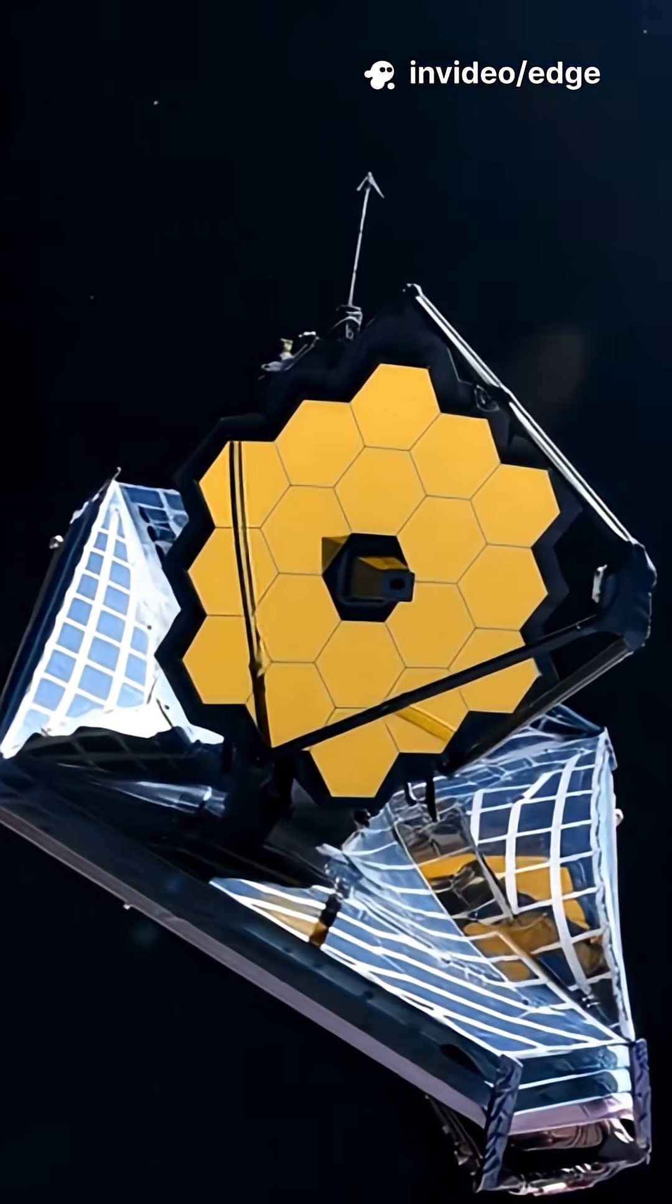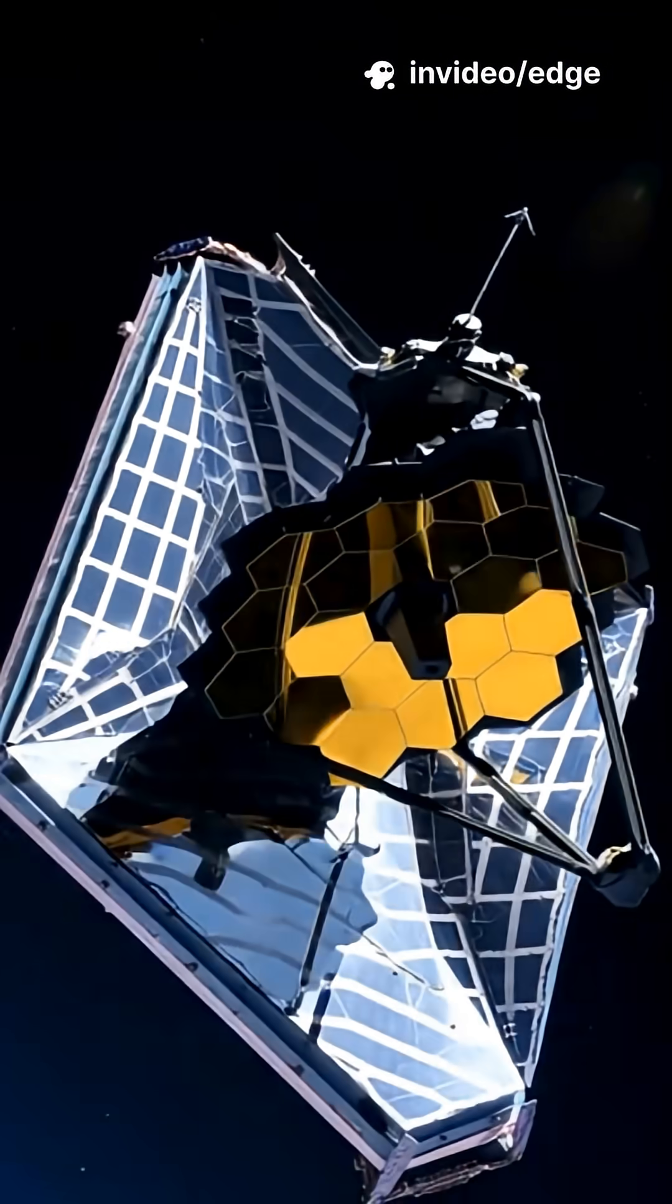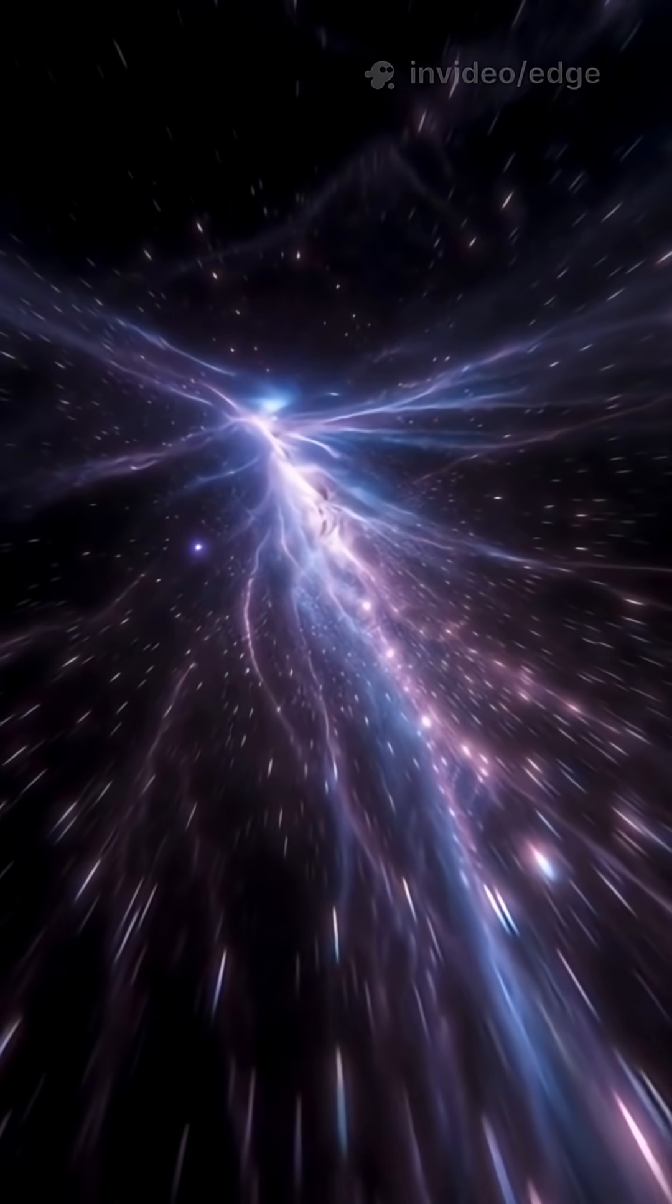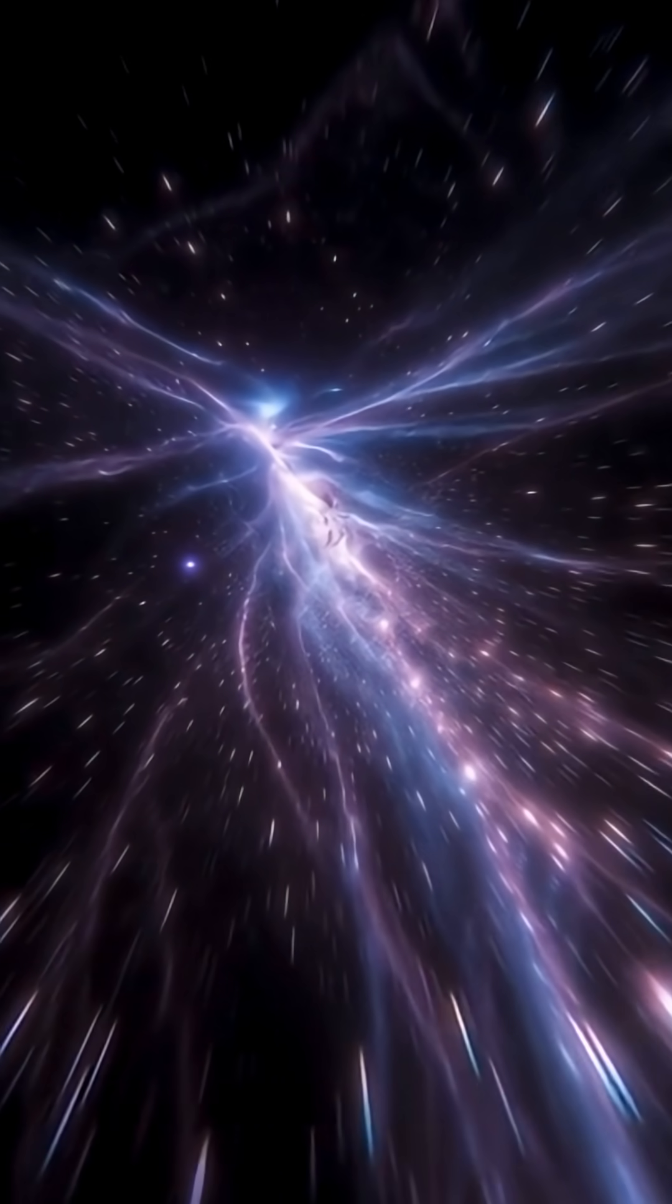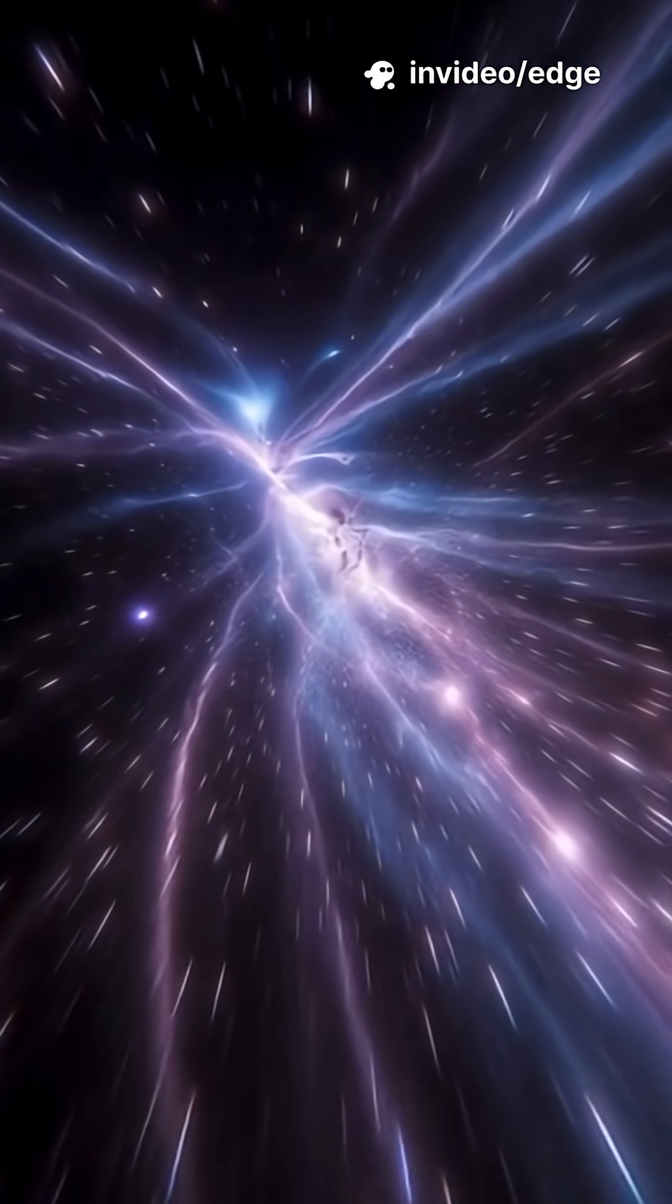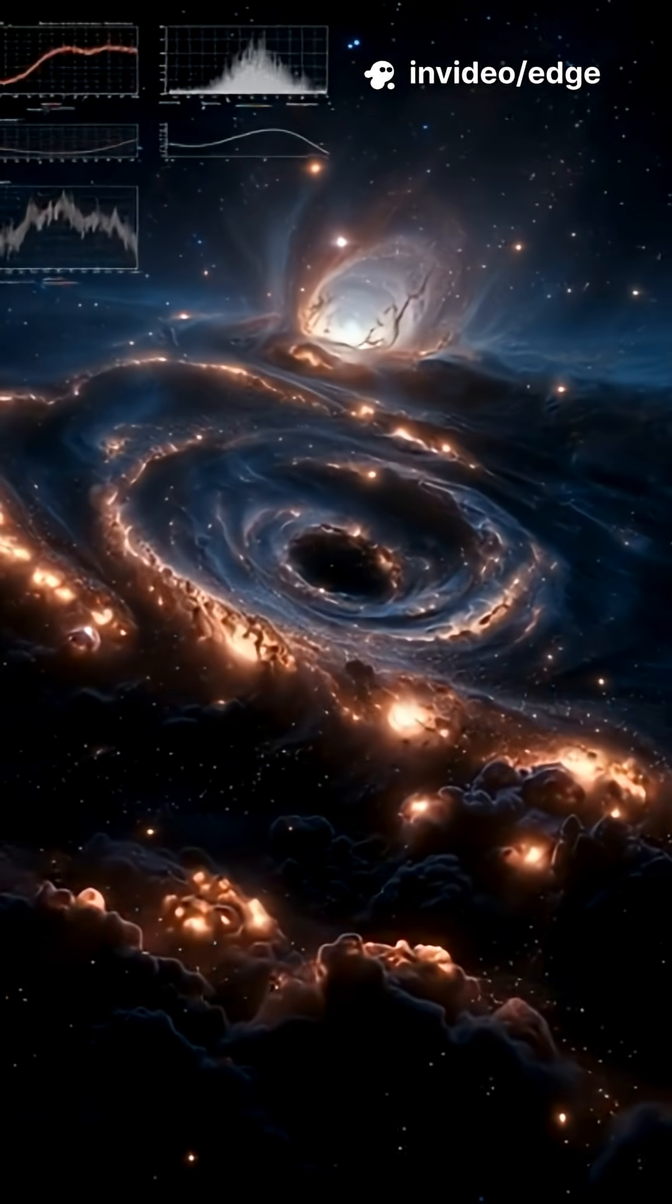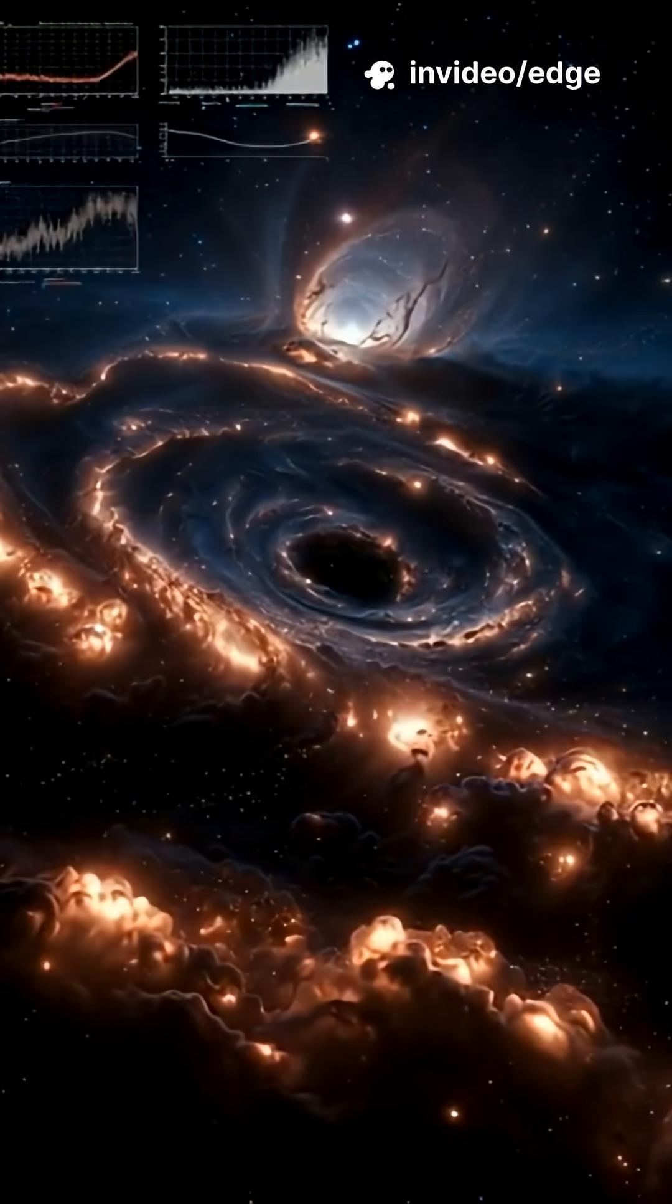But the James Webb Space Telescope has uncovered a mystery. Many of these infant galaxies are extraordinarily elongated, slender filaments of stars stretching across the void like threads pulled taut. Standard theories, built on cold dark matter, predict compact, rounded forms.